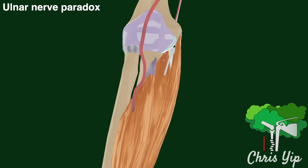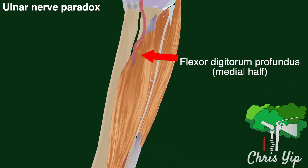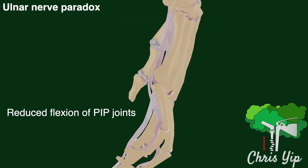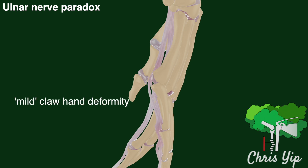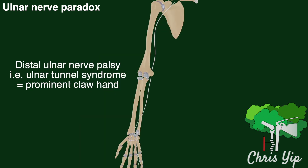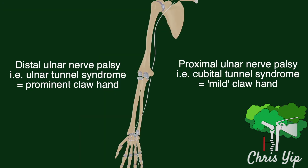However, if the site of injury is more proximal, such as at the cubital tunnel, this can also lead to paralysis of the flexor digitorum profundus. Therefore, there will be reduced flexion of the proximal interphalangeal joint, leading to a less severe claw hand appearance. In summary, the classical claw hand appearance due to ulnar nerve palsy is more prominent in a distal ulnar nerve palsy where the flexor digitorum muscles are not affected.